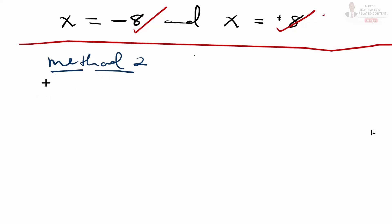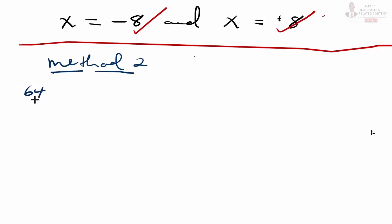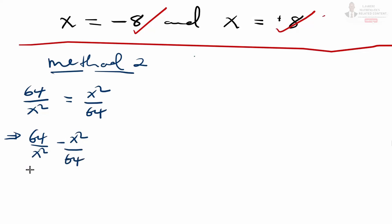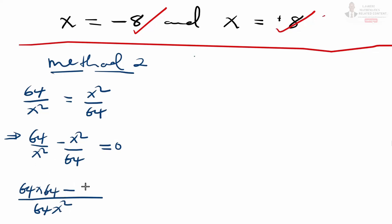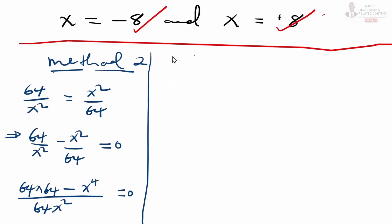Let us have method 2 that one could also use to get the values of x. We have 64 divided by x squared equals x squared divided by 64. One can bring the right hand side to the left: 64 divided by x squared minus x squared divided by 64 equals 0. Then find the LCM, which is 64x squared. We get 64 times 64 minus x squared times x squared, giving x raised to power 4, all over 64x squared, equals 0.